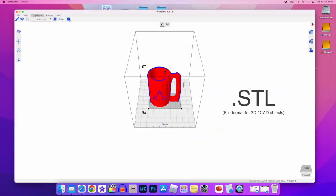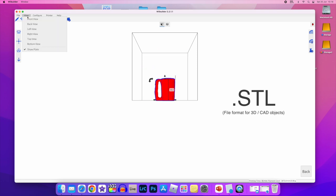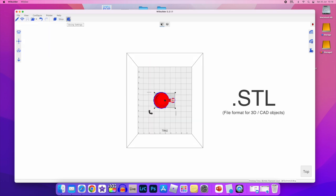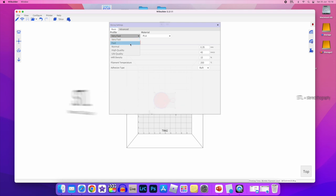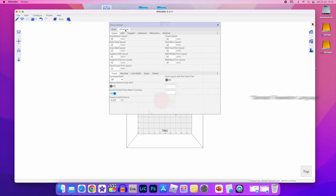STL is a file format commonly used for 3D printing and computer-aided design. STL is an acronym that stands for stereolithography, a popular 3D printing technology. You might also hear it referred to as standard triangle language or standard tessellation language.